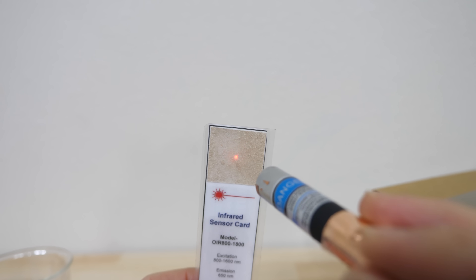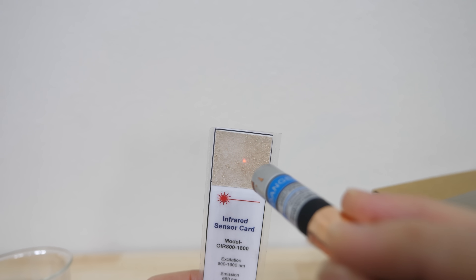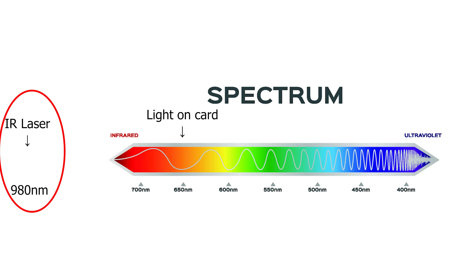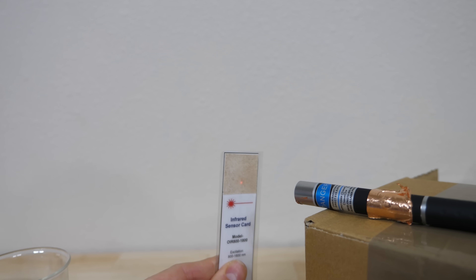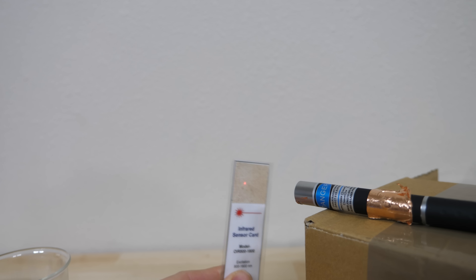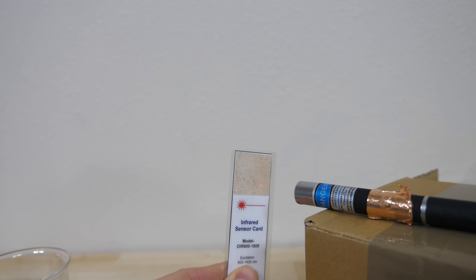But this shouldn't seem right to you if you think about the wavelengths and the energy of this light. Infrared light has a low frequency, long wavelength, but this paper is giving off red light with a higher frequency that has more energy. That seems to break the laws of thermodynamics. We should expect to get only the same frequency or lower frequency than the light that we shined on it to begin with. So what's going on in this case?